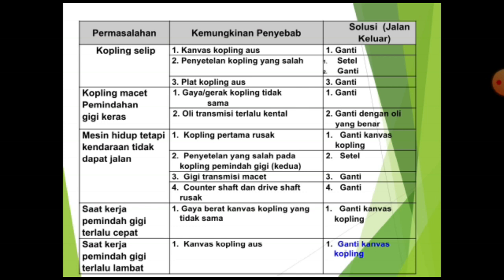Mesin hidup tetapi kendaraan tidak dapat jalan. Penyebabnya coupling pertama rusak, solusinya kampas harus diganti, ganti kampas coupling. Penyetelan yang salah pada coupling pemindah gigi kedua, solusinya harus dilakukan penyetelan. Gigi transmisi macet, harus diganti, dilakukan penggantian. Counter sub dan drift sub rusak, juga harus dilakukan penggantian, dibongkar terus diganti.